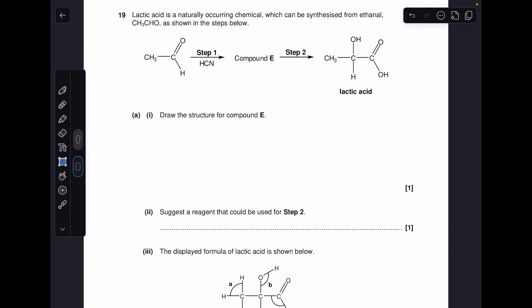So we've got this synthetic route going from ethanol to lactic acid through compound E, so we've got to come up with the structure for compound E, which is formed when you react that ethanol with HCN. So there's the structure of the product there, that's a hydroxynitrile, so basically the H from the HCN has gone on to this oxygen here, that's become a single bond obviously, and the CN group has joined on to there.